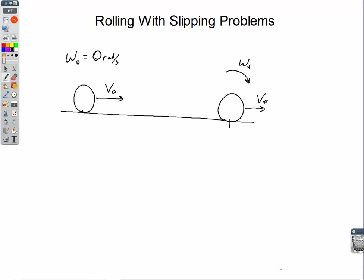Welcome. In this video we're going to take a look at problems that involve an object that's rolling but slipping on the surface until at some point it will be rolling without slipping. The classic example is a bowling ball. When you first throw it down the lane, it has an initial linear velocity V₀ but no rotation yet. As the ball goes, it starts to roll faster and faster until at some point down the lane it's rolling without slipping.